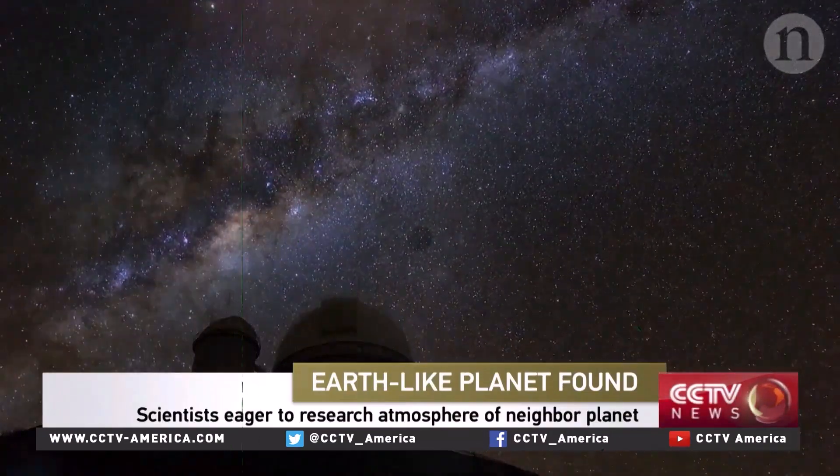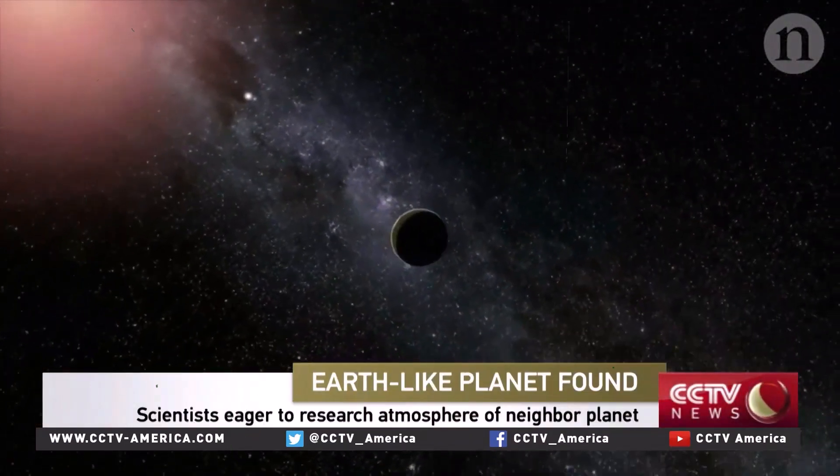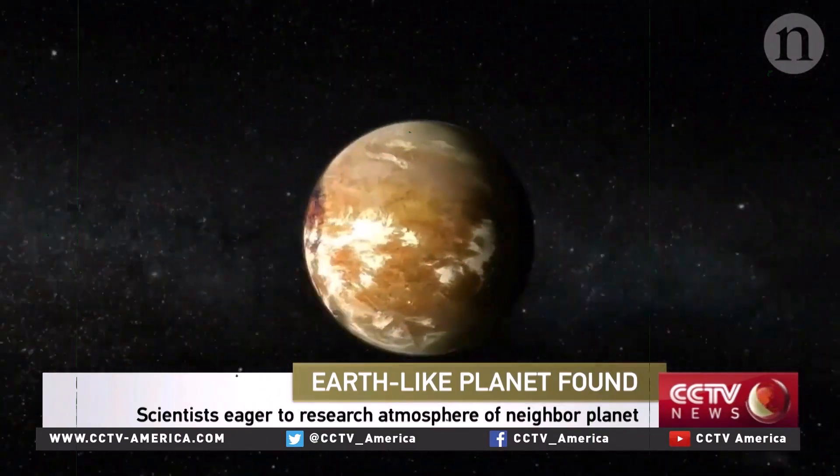Not so very far from Earth, relatively speaking, scientists have discovered a new planet known as Proxima b. We have found the terrestrial planet orbiting Proxima Centauri. It's the nearest exoplanet we will ever find because it's the nearest star to the Sun, and we are very excited about it.